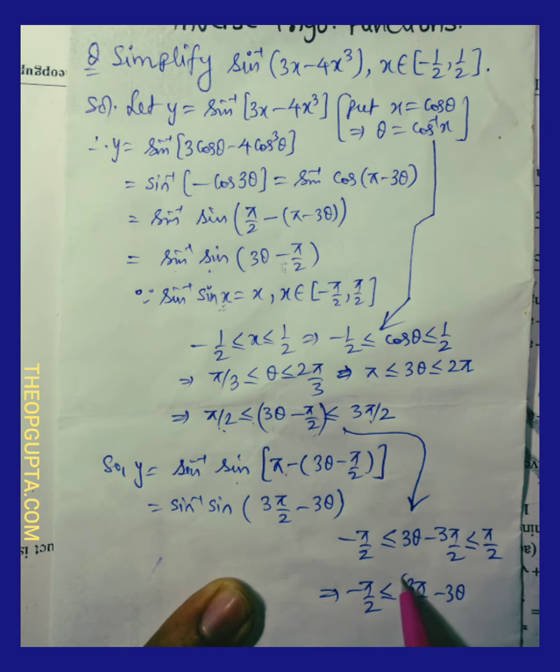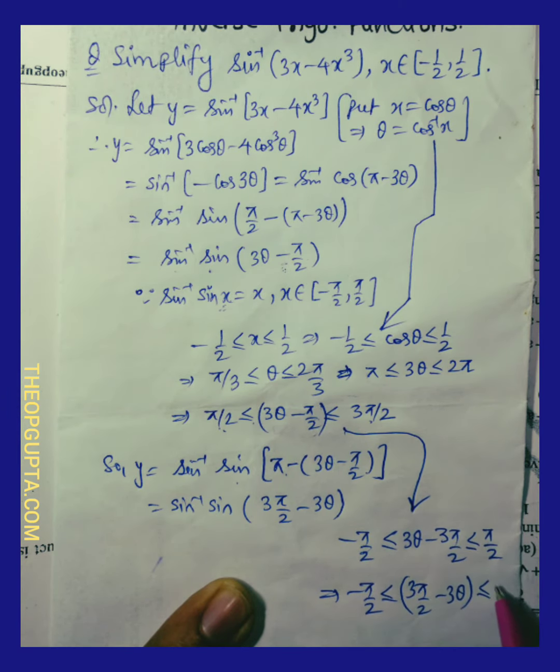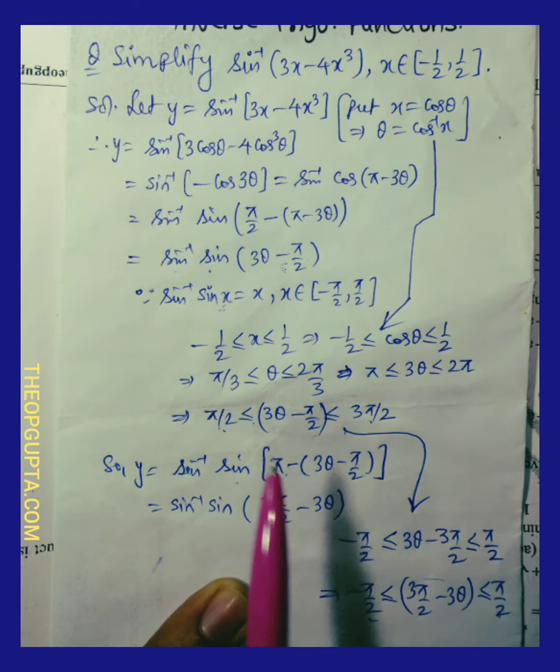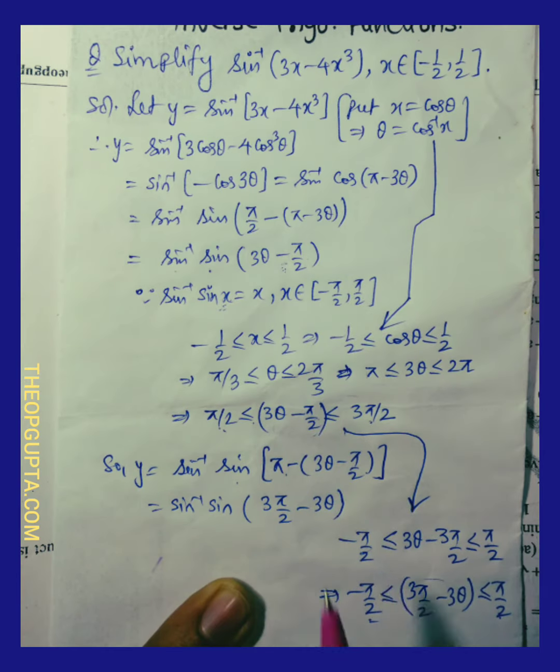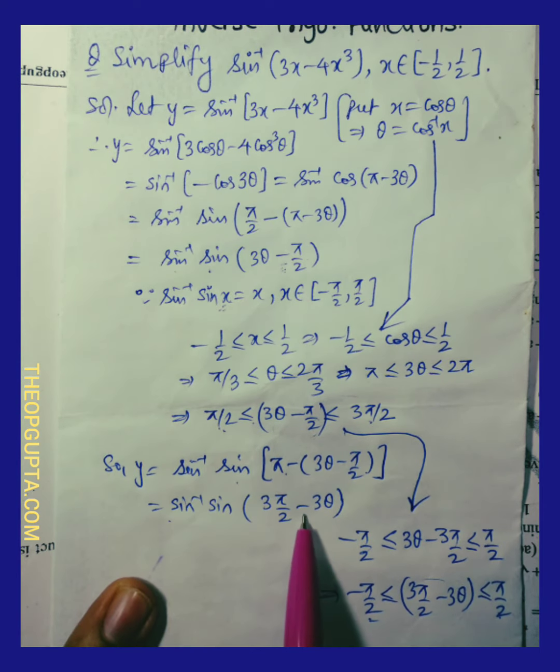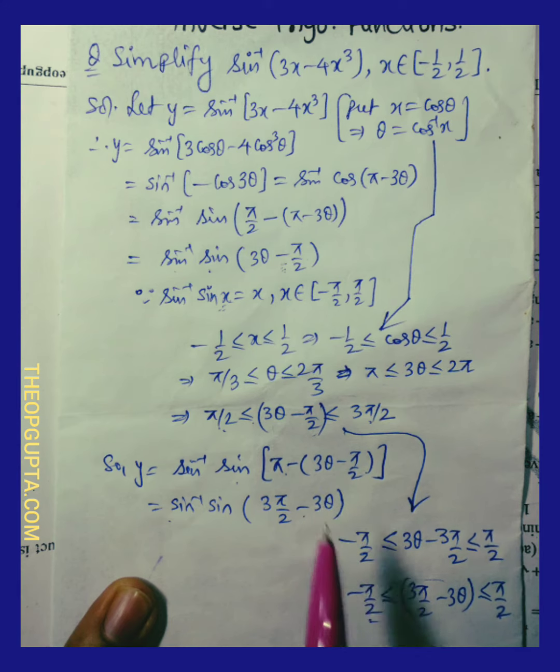If we take negative of this, we will have 3 pi by 2 minus 3 theta this way, and this is pi by 2. Now this value lies in the principal value branch range of sine inverse function. That means sine inverse of sine x, where x is belonging to the principal value branch range, will give us x as it is.